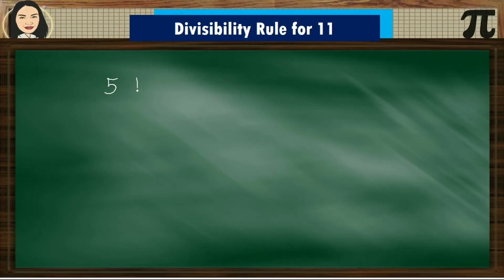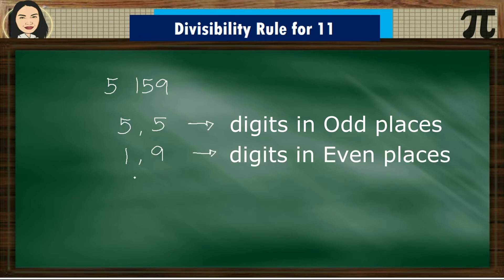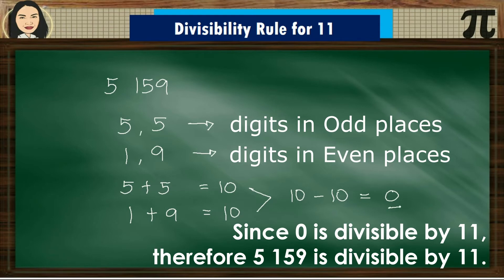Let's have this example: 5,159. The digits 5 and 5 are in odd places; 1 and 9 are in even places. Add 5 plus 5, which equals 10, and 1 plus 9, which also equals 10. Then subtract: 10 minus 10 equals 0. Since 0 is divisible by 11, therefore 5,159 is divisible by 11.